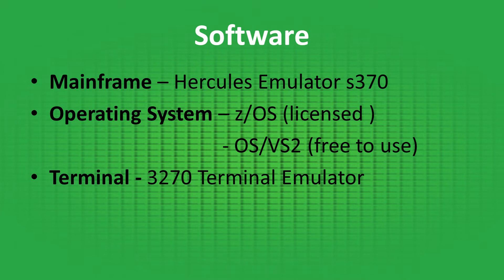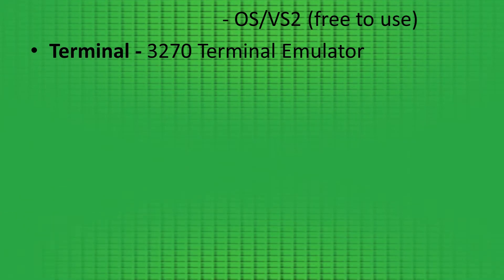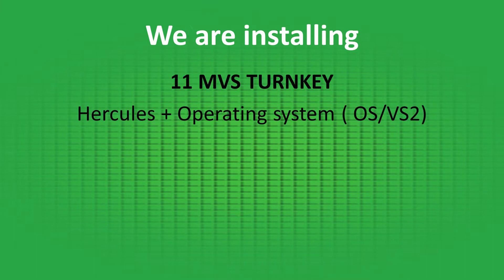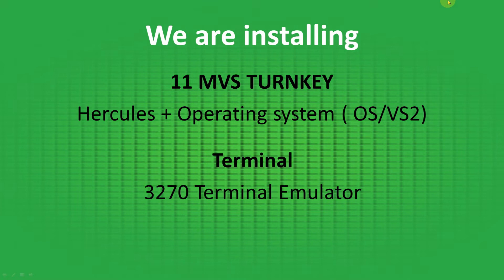If we install the mainframe emulator, operating system, and terminal separately, it will take time and require a lot of setup. So instead we are going to install MVS Turnkey, because it is a combination of Hercules — the mainframe emulator — and OSVS2 — the operating system. Once MVS Turnkey is installed, we have both. The only remaining thing to install separately is the 3270 terminal emulator.